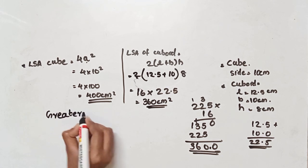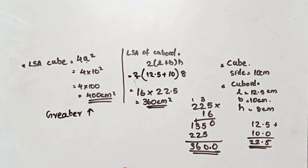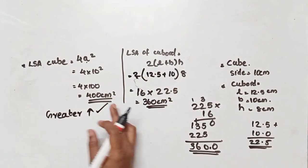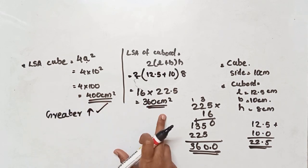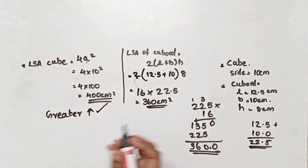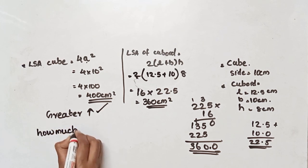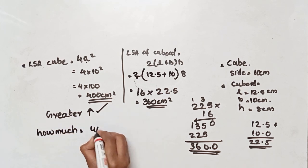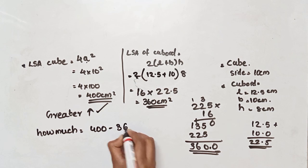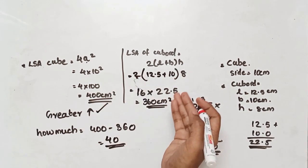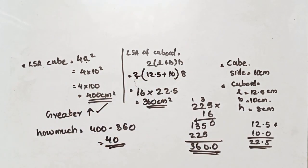So the lateral surface area of the cuboid is 360 cm squared. The cube has a greater lateral surface area. By how much? 400 minus 360 is 40. So the cube has a greater lateral surface area by 40 cm squared.